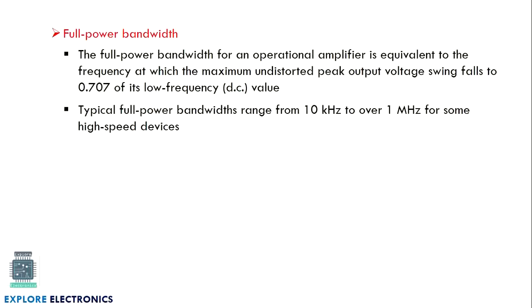Then full power bandwidth — the range of frequencies an op-amp can amplify is the bandwidth. A full power bandwidth of an op-amp is equivalent to the frequency at which maximum undistorted peak output voltage swing falls to 0.707, which is 3 dB less than the DC value. Typically the full power bandwidth ranges from 10 kilohertz to 1 megahertz, with the maximum bandwidth from high speed devices being 1 megahertz.